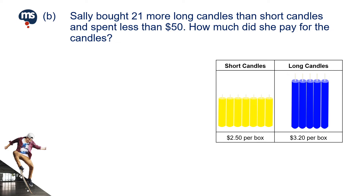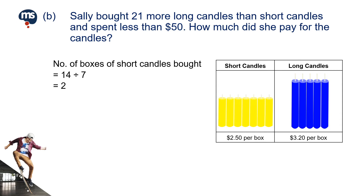Next, to find the number of boxes of short candles bought, we divide 14 by 7, which gives us 2. To find the number of boxes of long candles bought, we divide 35 by 5, which gives us 7.